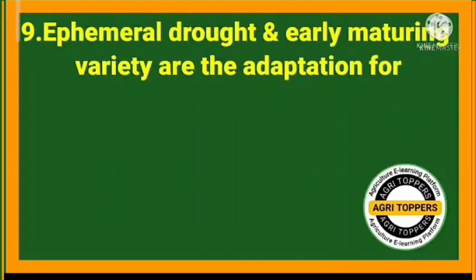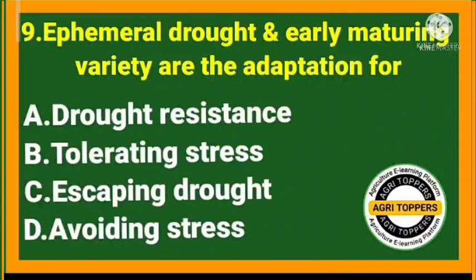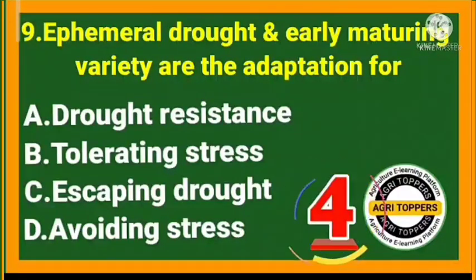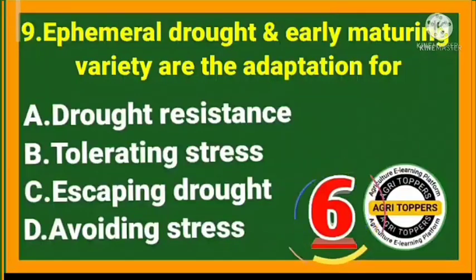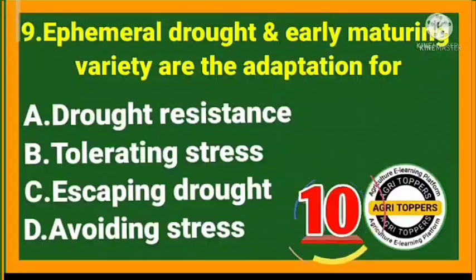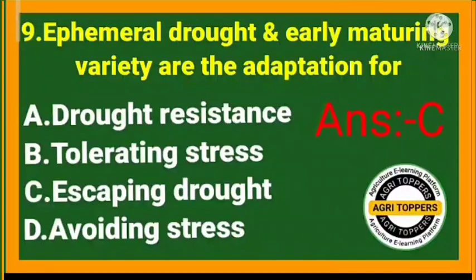Ninth question: ephemeral drought and early maturing variety are adaptations for escaping drought.